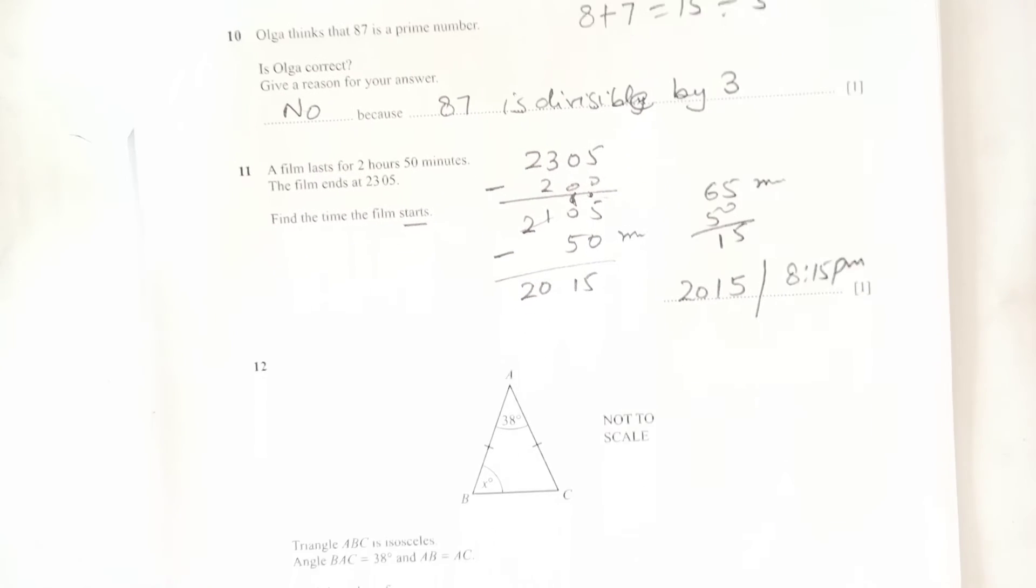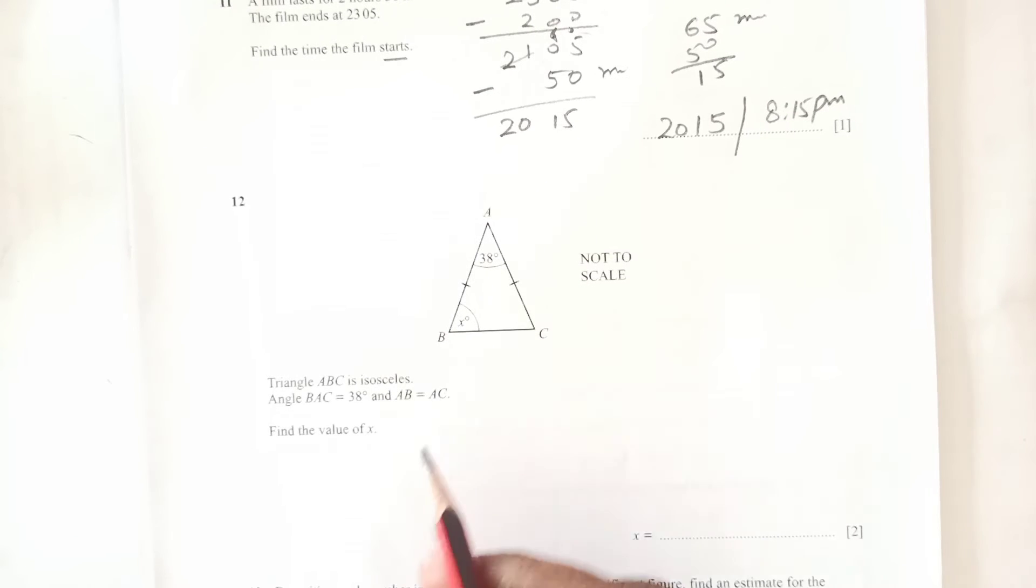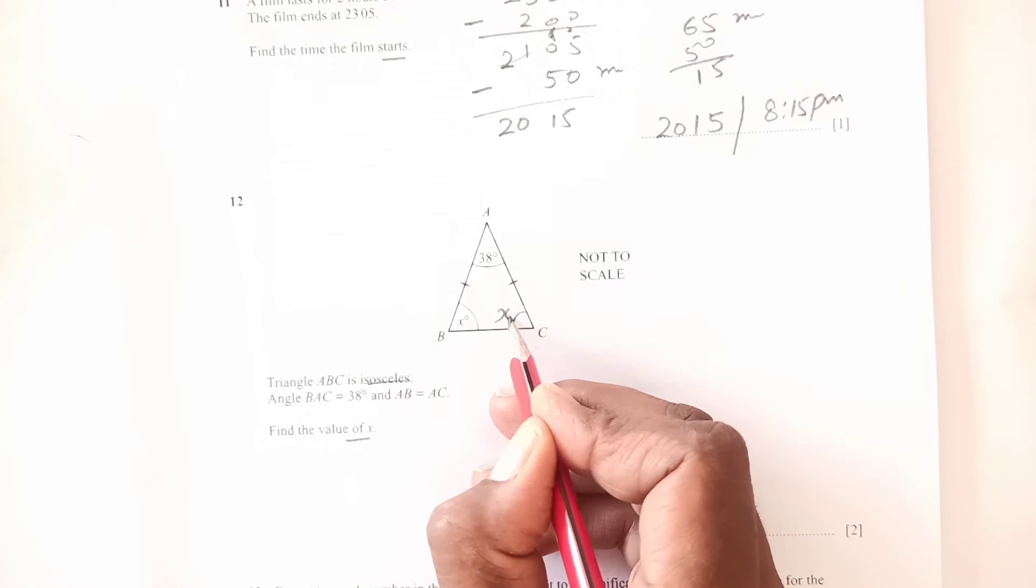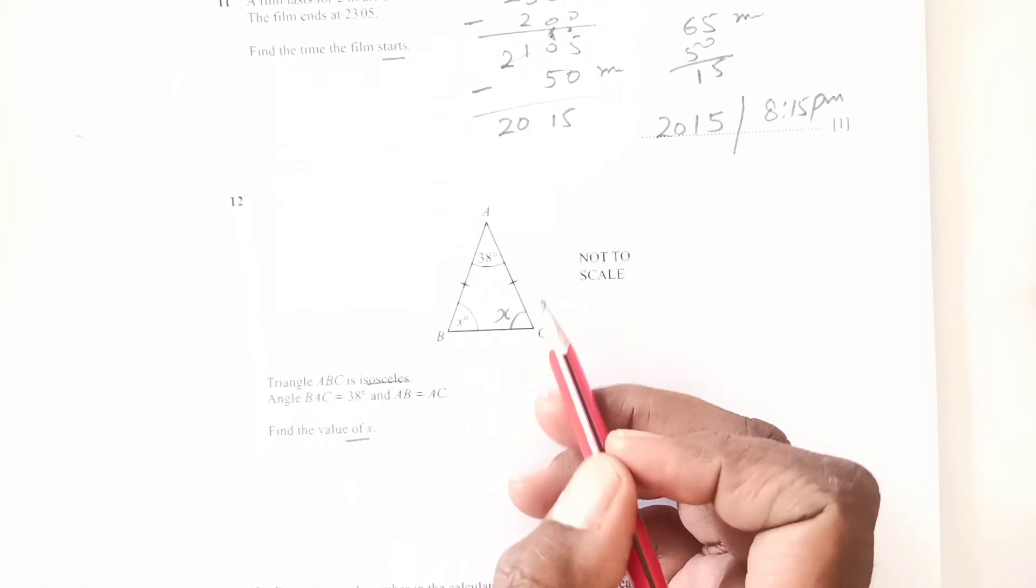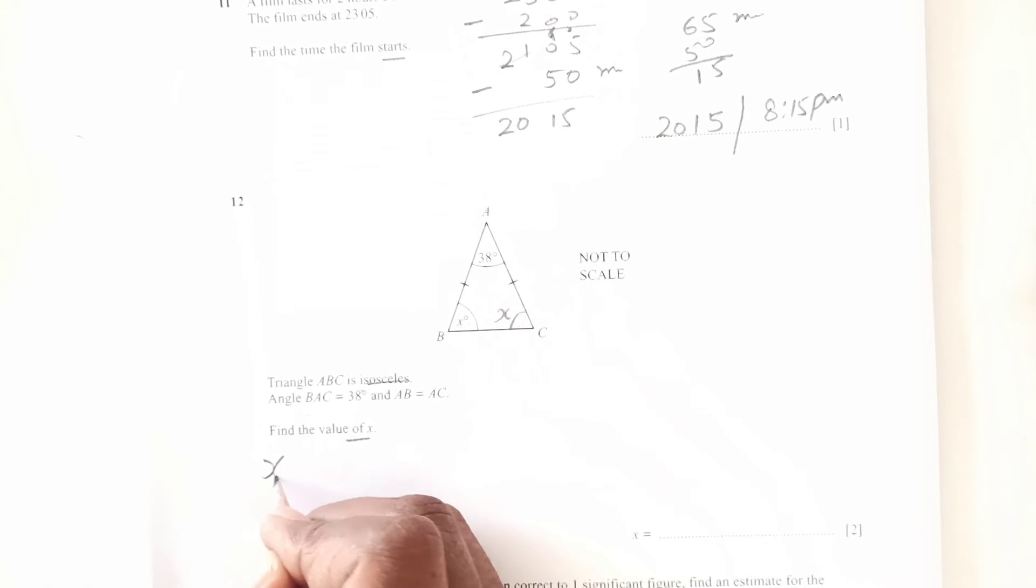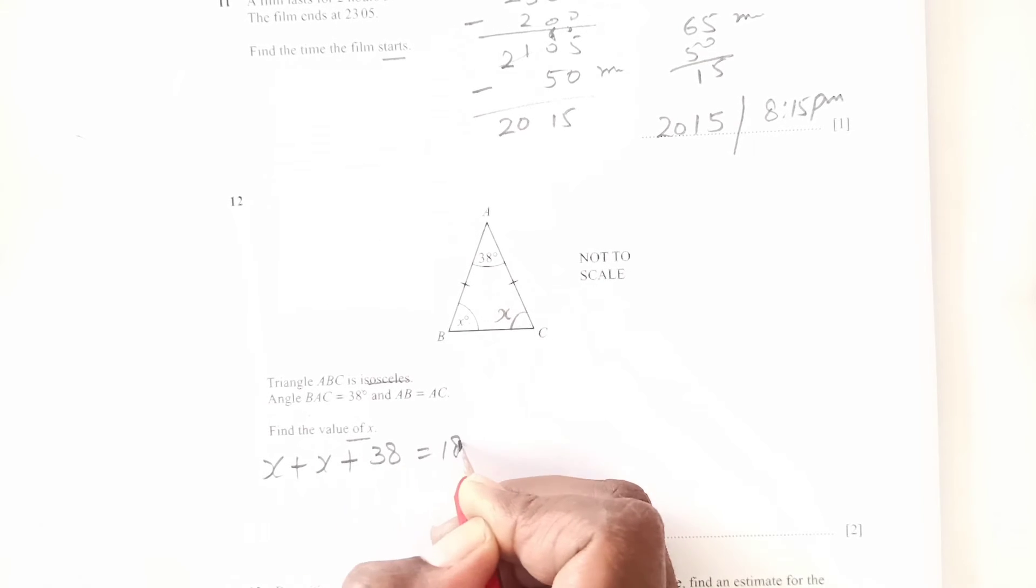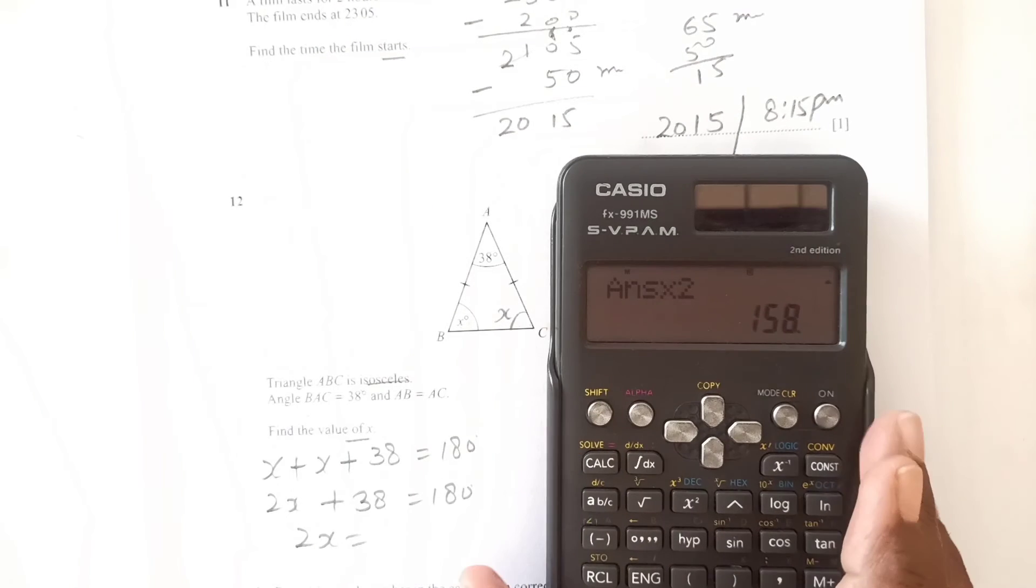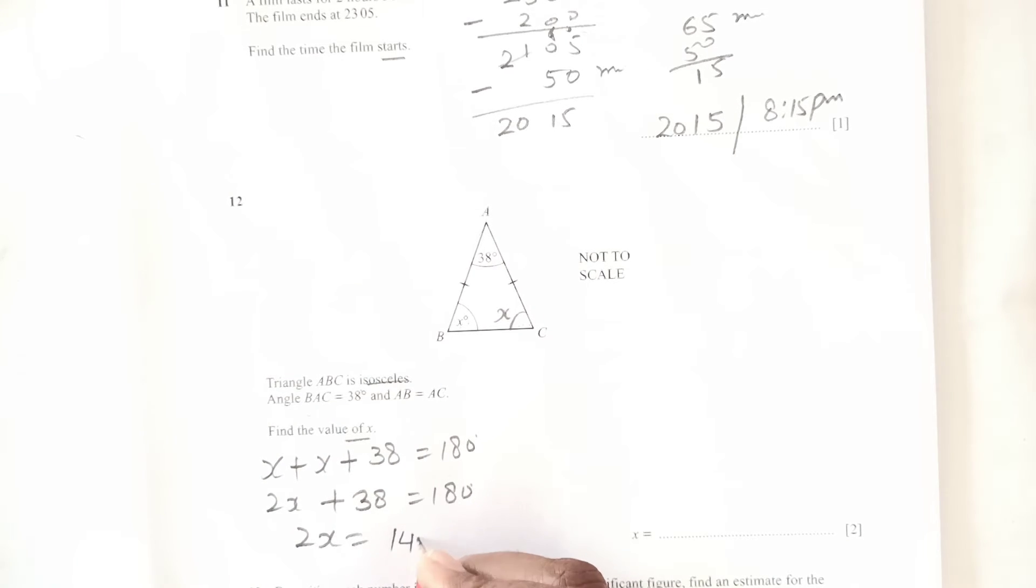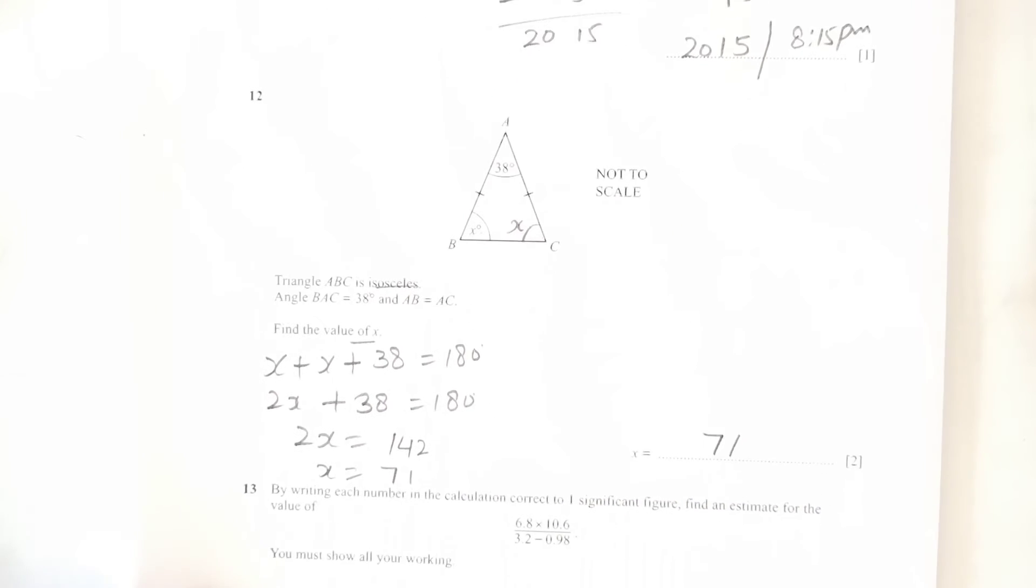Number 12: triangle ABC is isosceles. Angle BAC is 38 degrees, AB and AC are equal. Find the value of x. If this is x, this is also x because opposite angles of isosceles triangle are equal. So we have x plus x plus 38 is 180. 2x plus 38 is 180, so 2x is 180 minus 38, which is 142. X is 142 divided by 2, which is 71.